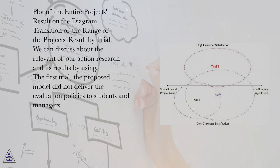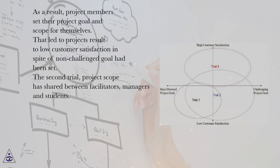We can discuss about the relevance of our action research and its results by using the diagram. The first trial, the proposed model did not deliver the evaluation policies to students and managers. As a result, project members set their project goal and scope for themselves. That led to project's result to low customer satisfaction in spite of non-challenged goal had been set.